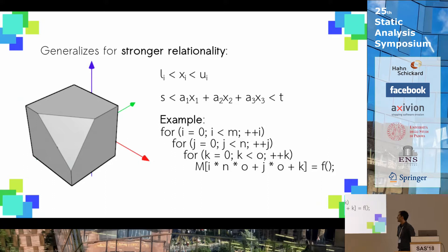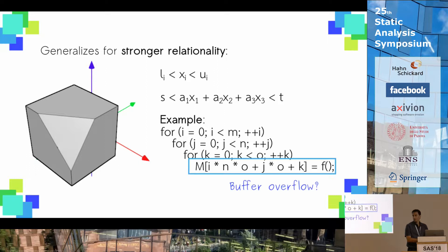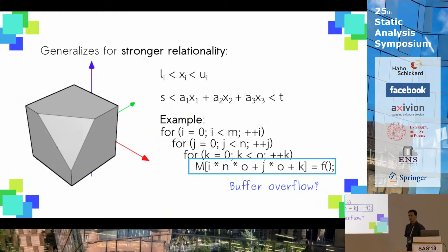For instance, this can be used in this toy piece of code which represents a matrix initialization where the matrix is linearized, which happens quite often in programming languages like C, where we have to access the matrix by using some expression in this form. At this point, we may wonder whether this could lead to a buffer overflow. If we are able to express the expression representing the index by a constraint in the form written above, it is very easy to verify that there is no buffer overflow here.